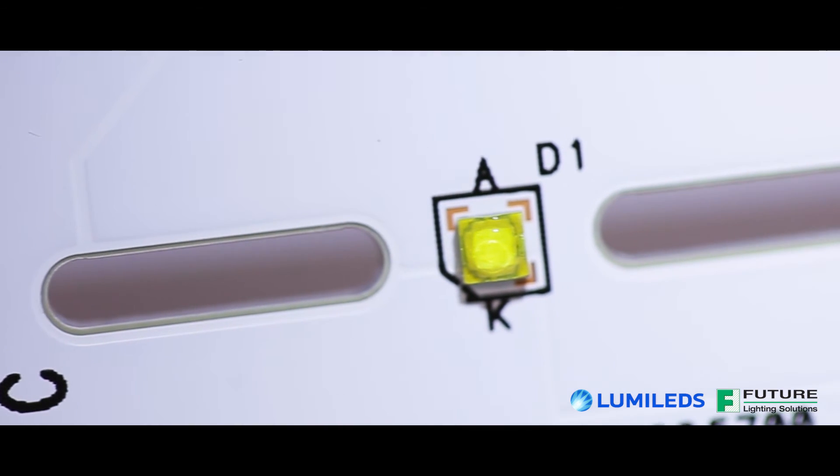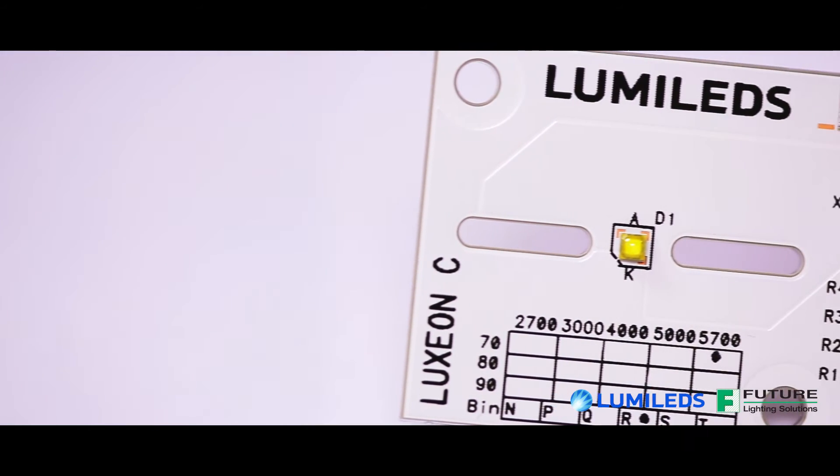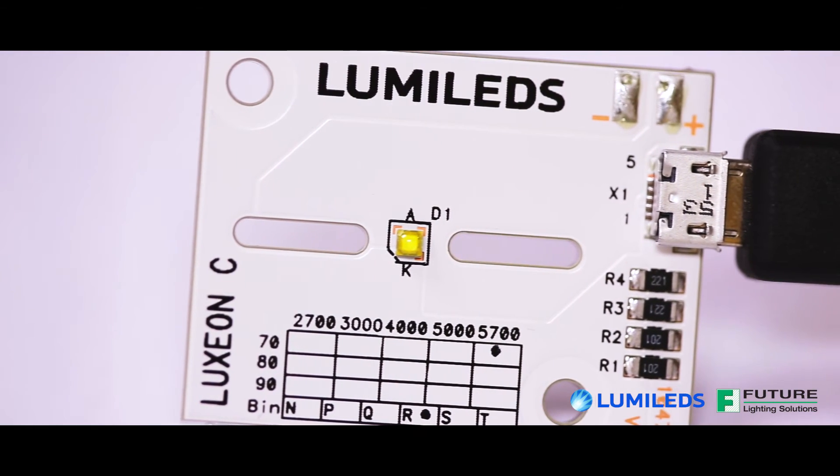With its compact 2mm by 2mm package, Luxion C enables close packing and high color density. It also features an easy to solder three-stripe pad layout with an electrically isolated thermal pad for better heat management.